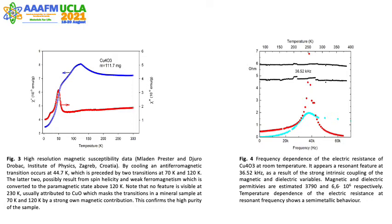Figure 4 shows electric resistance dependent on frequency, with strong magneto-electric coupling indicated by a resonance at 36.52 kHz. The evaluated dielectric permittivity is 6.6 and the magnetic permittivity is 3790, where the latter is in agreement with the susceptibility data. The upper curve presents the temperature dependence of the resistance at resonant frequency, and the constant value is extended up to 775 K.